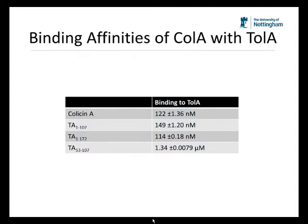We then needed to make sure that the TA53 to 107 protein still has tight affinity to TolA3, and we used SPR to do this. Despite having 10 orders of magnitude lower affinity than the larger translocation domains and indeed colicin A, the affinity of TA53 to 107 with TolA3 was still in the micromolar range and therefore still suitable for complex formation and crystallization trials. We therefore formed the complex and put the complex protein through crystallization trials, and we were able to solve the structure of TA53 to 107 with TolA3.